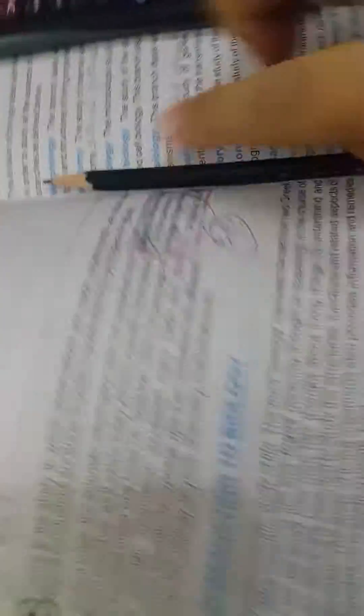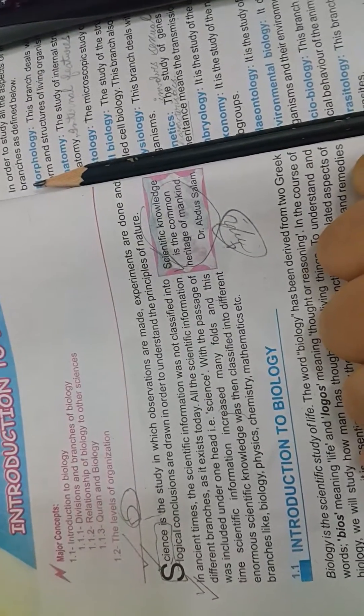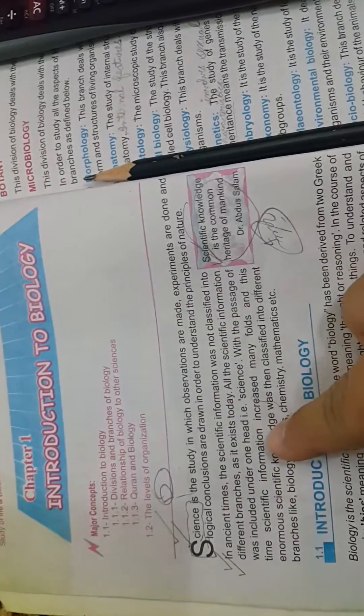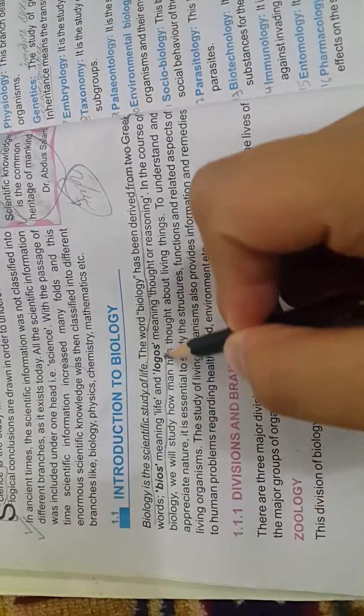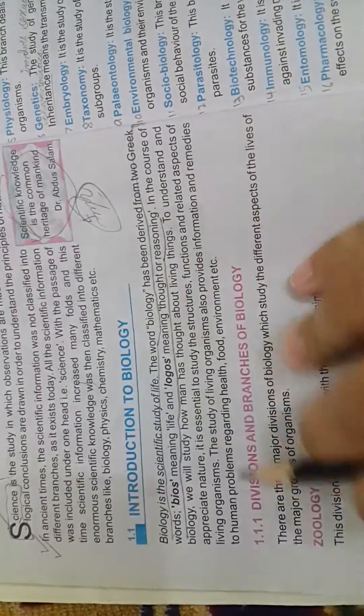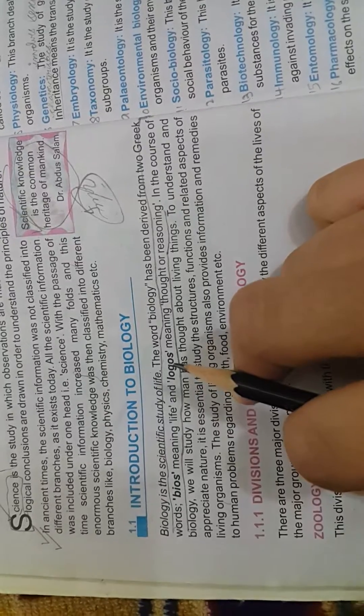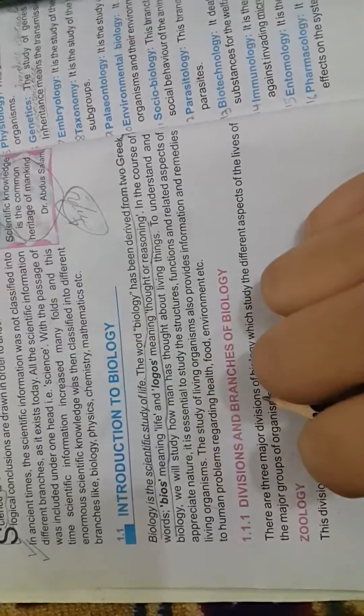As the time passed, scientific information also increased and many scientists came, and they were now divided into different main branches. These are the main branches of science: biology, physics, chemistry, mathematics, etc. Biology is the scientific study of life. The word biology has been derived from two Greek words: bios meaning life, and logos meaning thought or reasoning. In the course of biology we'll study... If you want me to explain you in Urdu, you can just comment that down below.